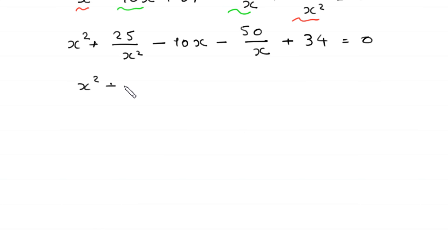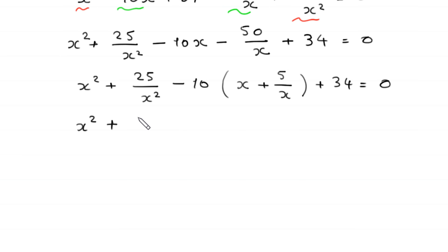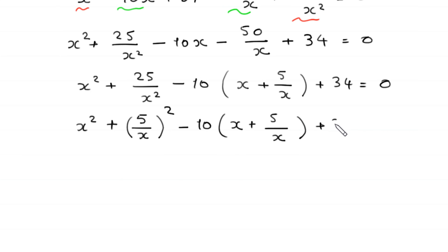From the first group of terms we can factor out negative 10 as a common factor, leaving x plus 5 over x in brackets. For x squared plus 25 over x squared, since we have x plus 5 over x, we write 25 over x squared as 5 over x whole squared.